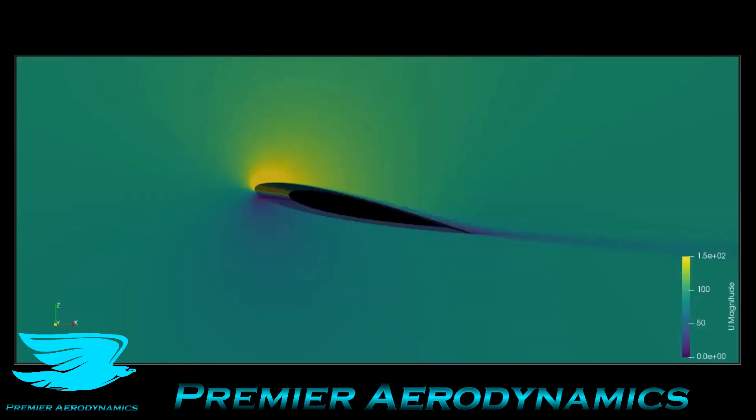This is the velocity cut through the airfoil. The velocity ranges from 0 to 150 meters per second. The freestream velocity is 90 meters per second, so compared to lower angles of attack where we had 120 meters per second flow over the suction surface, now it's at 150, so the flow is accelerating much more.